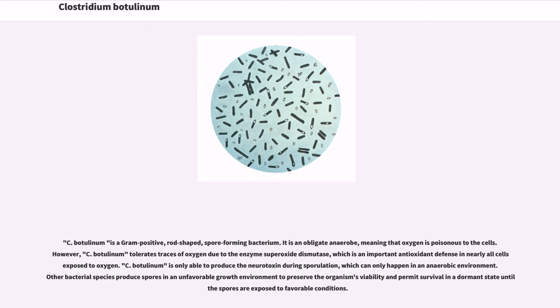C. botulinum is only able to produce the neurotoxin during sporulation, which can only happen in an anaerobic environment. Other bacterial species produce spores in an unfavorable growth environment to preserve the organism's viability and permit survival in a dormant state until spores are exposed to favorable conditions.